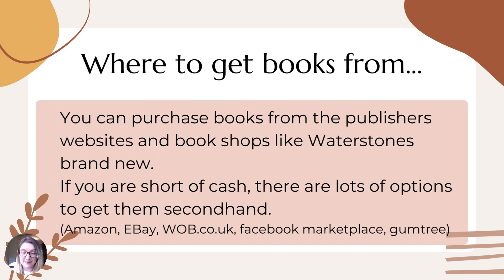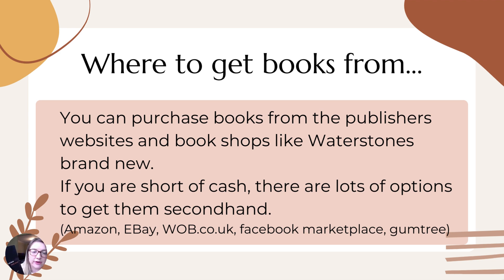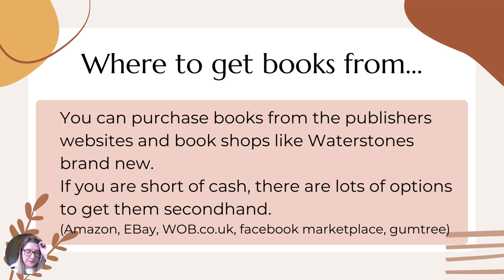As much as books are amazing, they can be very expensive. So where can you get them? You can go straight to the publisher — this one is Collins and this one is CGP — and order directly from their websites. Or you could go to a bookshop like Waterstones; The Works has some of them as well. You can also go to Amazon. But you also have lots of options for secondhand books on Amazon, eBay, World of Books, Facebook Marketplace, and Gumtree — you'll pick them up a lot cheaper in those places.